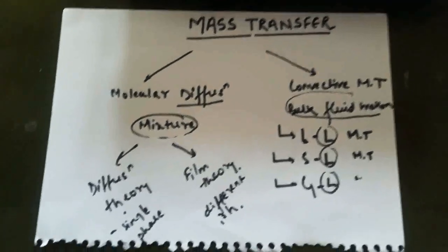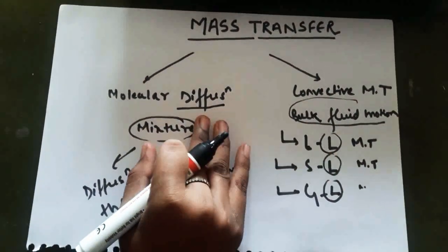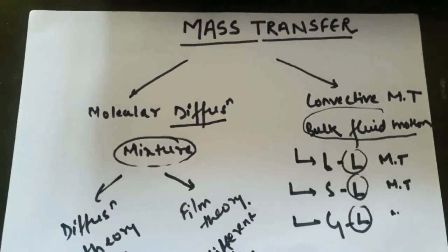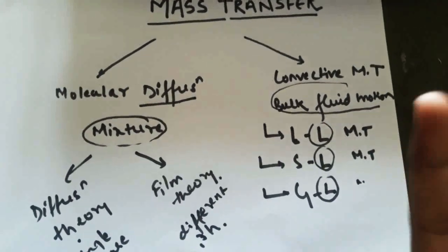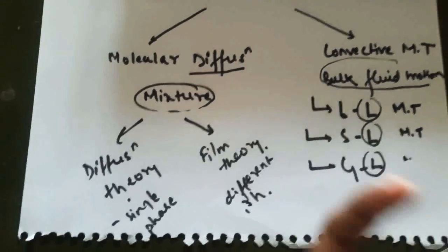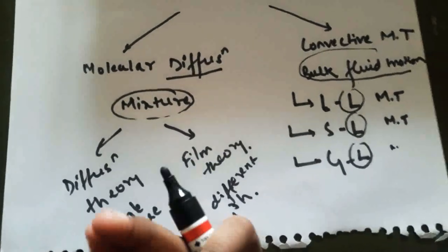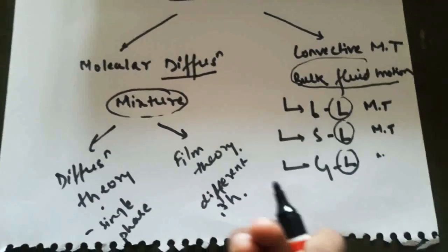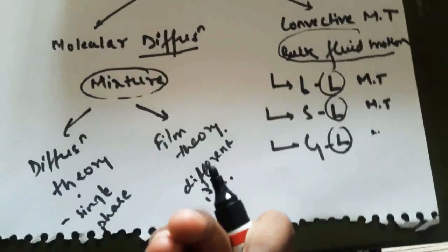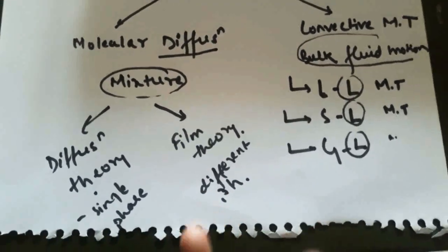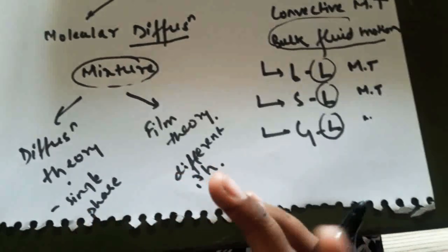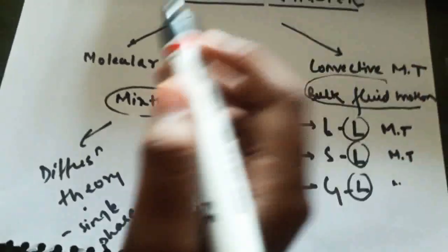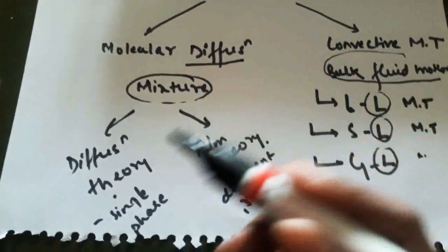To summarize: mass transfer is divided into molecular diffusion and convective mass transfer. In molecular diffusion we consider mixtures, while in convective mass transfer we consider bulk fluid motion — consisting of liquid-liquid, gas-liquid, or solid-liquid transfer. In molecular diffusion, we consider two important theories: diffusion theory (single phase, e.g., sugar water with one component having a concentration gradient) and film theory (different phases such as aqueous and organic, with multiple mass transfers occurring simultaneously).